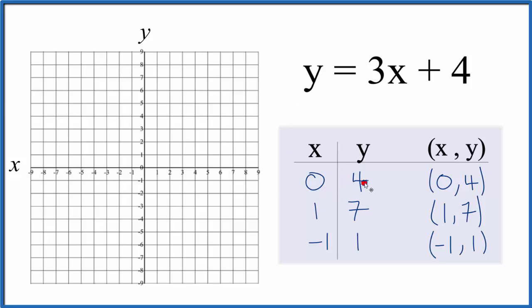So we go zero, four, so we find zero on the x-axis, and y is four, one, two, three, four. So that's our first point.